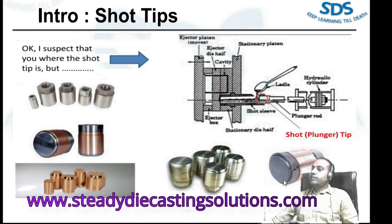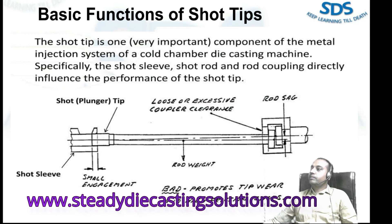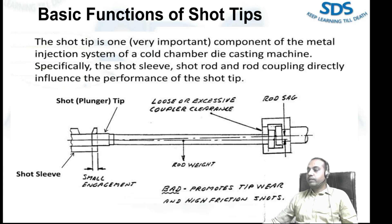The short tip is one component of the metal injection system of a cold chamber die casting machine. The shot sleeve, shot rod, and shot coupling directly influence the performance of the shot tip. As you can see, this is a plunger tip, this is a shot sleeve, and this is a pouring hole. When you pour the metal into the shot sleeve by manual ladling, it then fills the metal into the cavity at an appropriate velocity — this is the basic function.